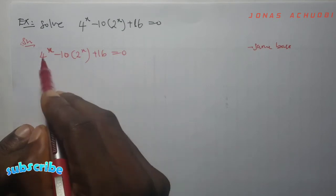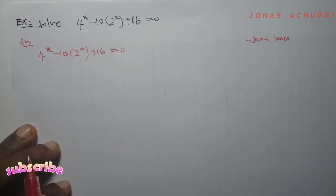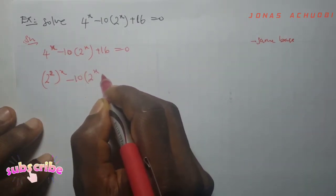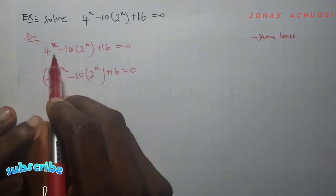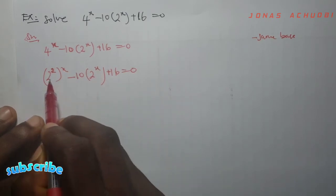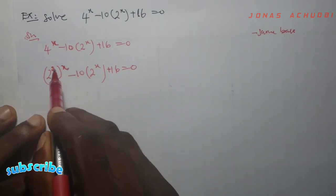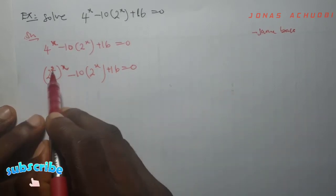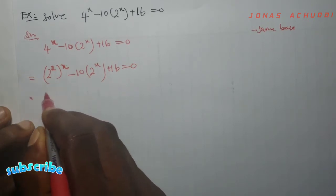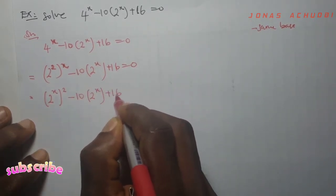So what is wrong with this problem right now is that the 4 carrying x has a different base from the 2. I can express 4 in terms of base 2. I write 4 as 2 raised to the power 2, so the equation becomes (2 squared) raised to the power x, minus 10 into 2 raised to the power x, plus 16 equal to 0. By indices, I can bring x inside and take the 2 out, since x times 2 is the same as 2x. So I rewrite this as 2 raised to the power x, squared, minus 10 into 2 raised to the power x, plus 16 equal to 0.